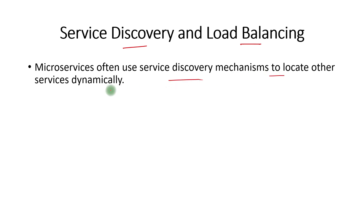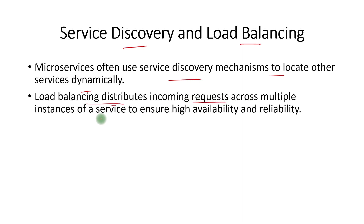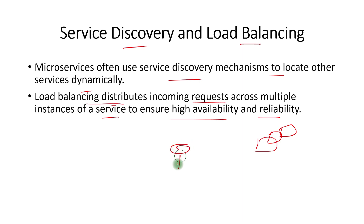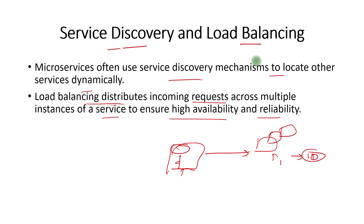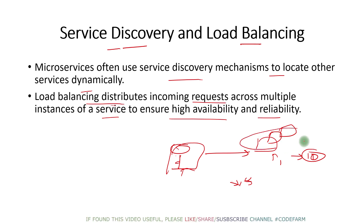The next principle is service discovery and load balancing. Microservices often use service discovery mechanisms to locate other services dynamically. Load balancing distributes incoming requests across multiple instances of a service to ensure high availability and reliability. A single instance cannot serve all requests, so multiple instances are needed. When new instances come up, they register with a service discovery platform, and the load balancer knows at any point how many instances are available and distributes requests among them — so the client does not have to worry about how many instances are available.